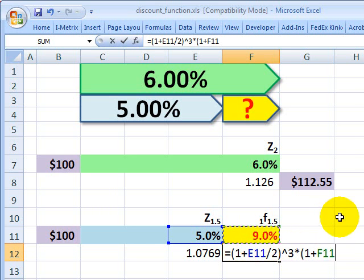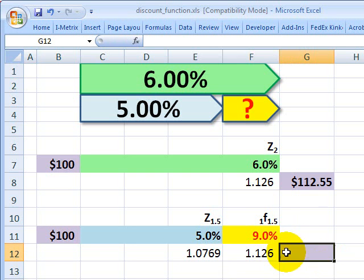1 plus that new forward rate that I just calculated, 9%. I'm going to divide that by 2 and close parens. So this simulates this bottom path of investing at the 5% spot for three periods and then rolling over into the forward rate of 9% for one period. It gets me my multiplier.